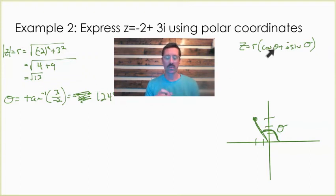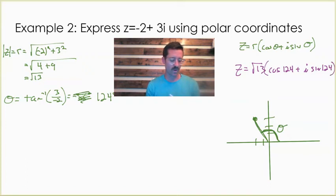Now that I know my r, now that I know my theta, we are ready to write our complex number in polar form. Z equals the square root of 13 times cosine of 124 plus i sine 124. Or if we wanted to write it in that abbreviated form I referenced earlier, it's going to be r cis theta.